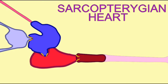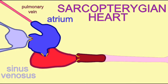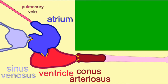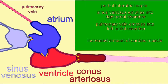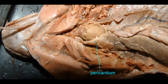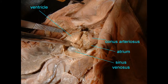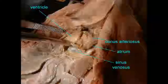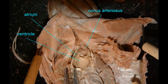The hearts of lungfish demonstrate the precursor to the tetrapod condition of separating the atria, given that lungfish have a partial septum between the two atria, and that while the sinus venosus empties the oxygenated blood into the right half, the lungs empty their pulmonary veins, carrying oxygen into the left half.